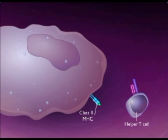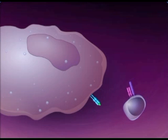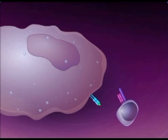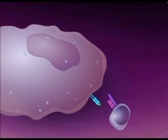Helper T-cells recognize an antigen when it is presented on a Class II MHC, because Helper T-cells have special recognition proteins on their surfaces called T-cell receptors. This interaction activates the Helper T-cells.